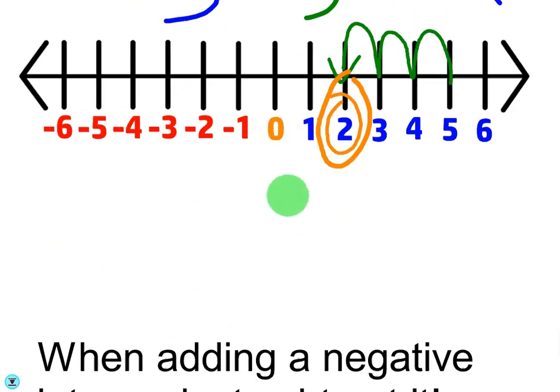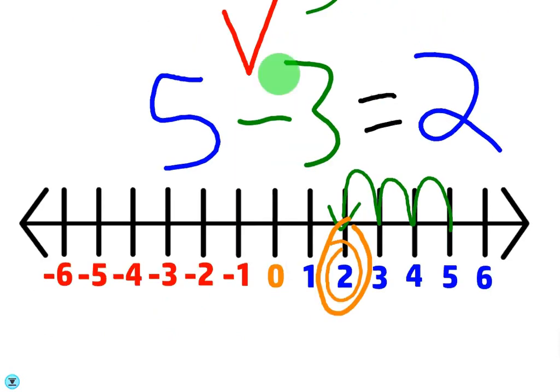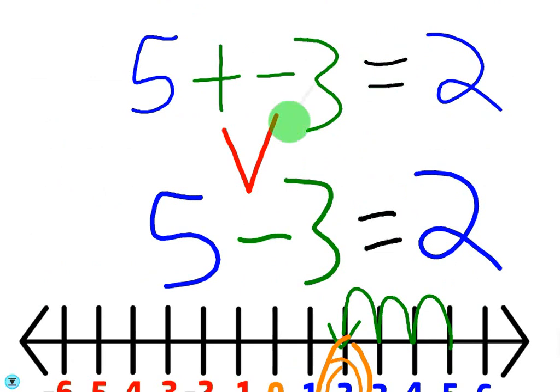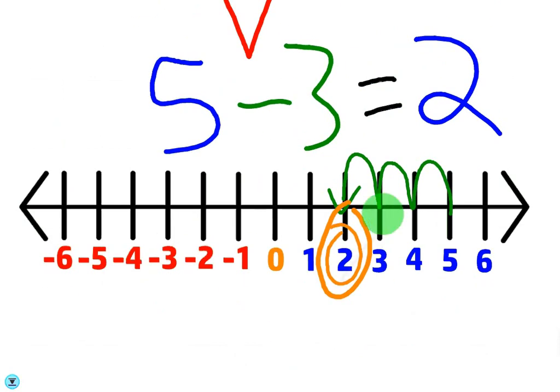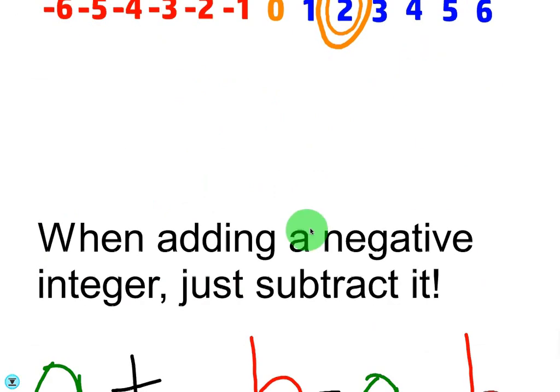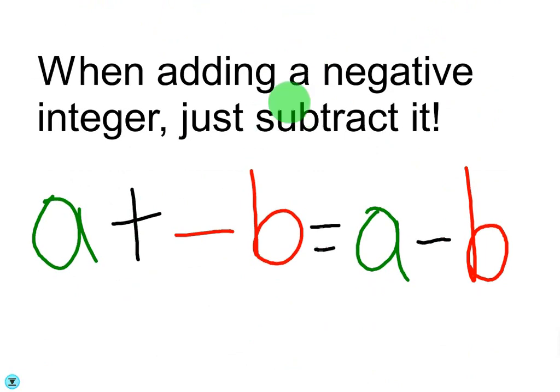However, the gist of this lesson stays the same. When adding a negative number, just subtract that number. That's it - when you're adding a negative, it just becomes subtracting the number. It's a simple rule, and it goes back to the number line and the concept of debt. You're subtracting money away from your pocketbook or wallet.